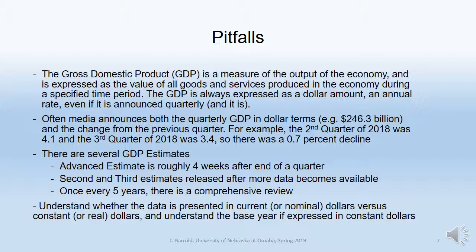There are also several GDP estimates. The one we usually hear about is called the advanced estimate — confusingly, it's not in advance; it's actually about three or four weeks after the previous quarter. It's called 'advanced' because not all the data has been gathered and measured. Then there are second and third estimates that come several weeks or months after that. Every five years, the BEA reviews all previous data to create historical data, because measuring a very large economy with millions of items of consumer goods is no easy task.